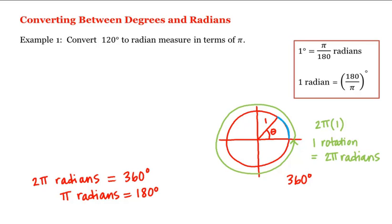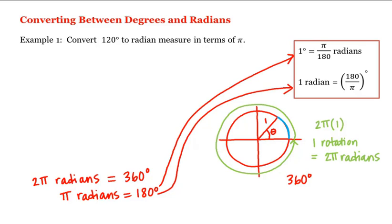If we divide both sides of this equation by pi, we get the second conversion formula, and if we divide both sides by 180, we get the first. We'll use this first equation when converting from degrees to radians, and the second equation when converting from radians to degrees. Since we're asked to convert from degrees to radians here, we'll use the first conversion.